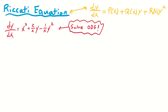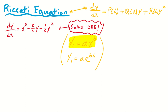Generally speaking, especially for a textbook problem, it's going to be of the form y₁ equals a times x raised to the b power, or alternatively y₁ equals a times e raised to the bx power. In this case, the second option definitely is not going to help us, but the first option probably will. A particular solution here is y₁ equals minus x squared, and we can verify that by just plugging it in.